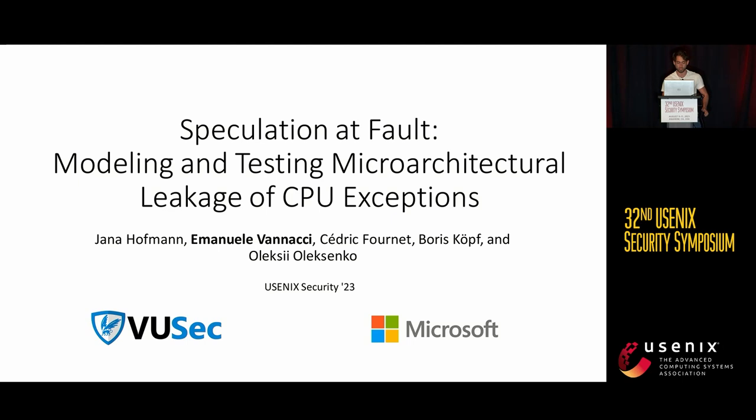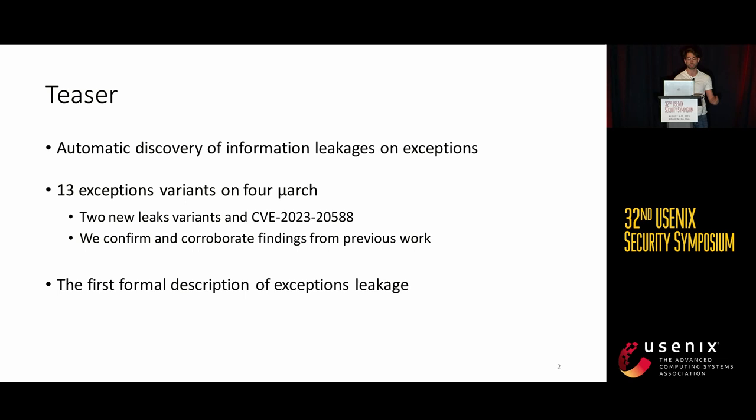Good afternoon. I'm Emanuele Vannacci from VU Amsterdam. This is work in collaboration with AdView Research and Microsoft. In the next 10 minutes, I want to talk about how to find information leakage vulnerabilities enabled by exceptions in an automatic manner. In our work, we tested 13 exception variants on four different CPUs, and we could confirm and corroborate findings from previous work while still finding new leaks and one CVE.